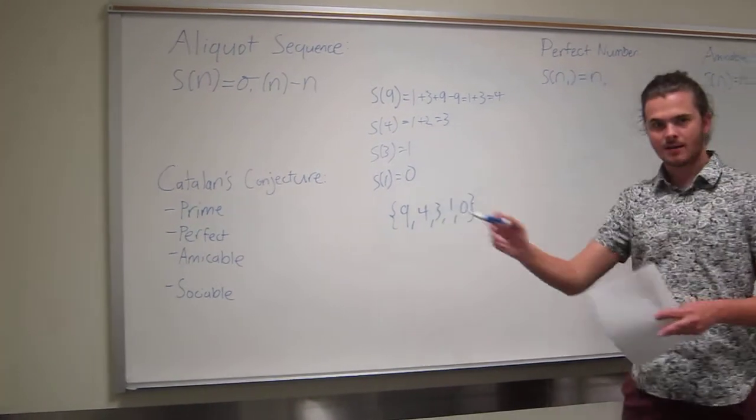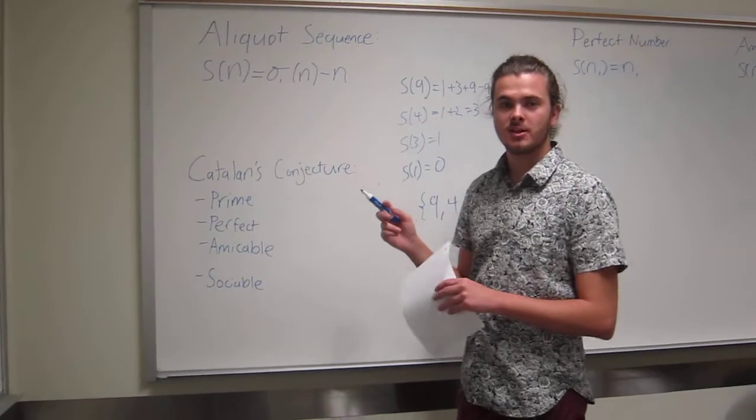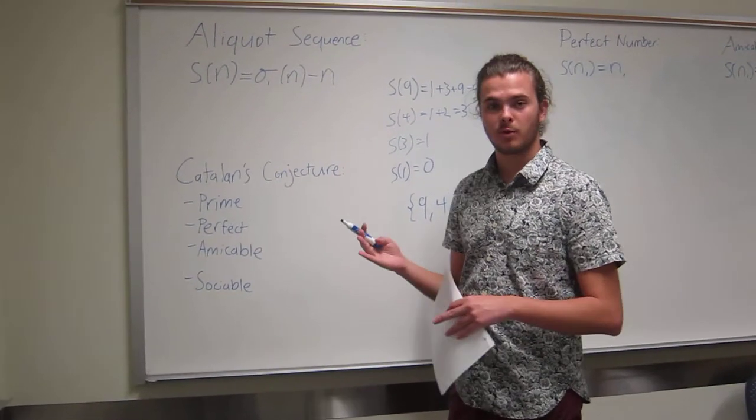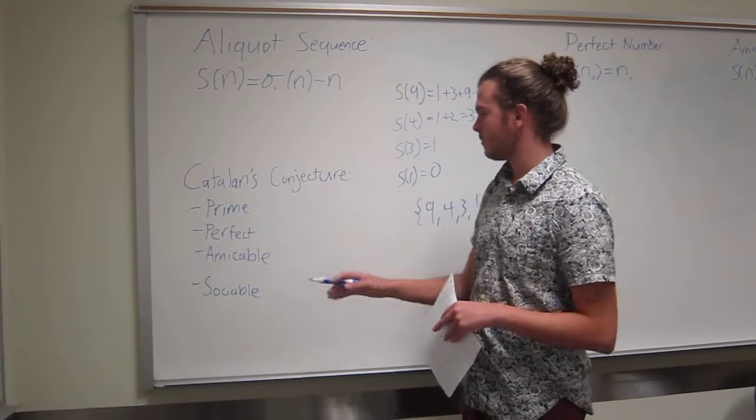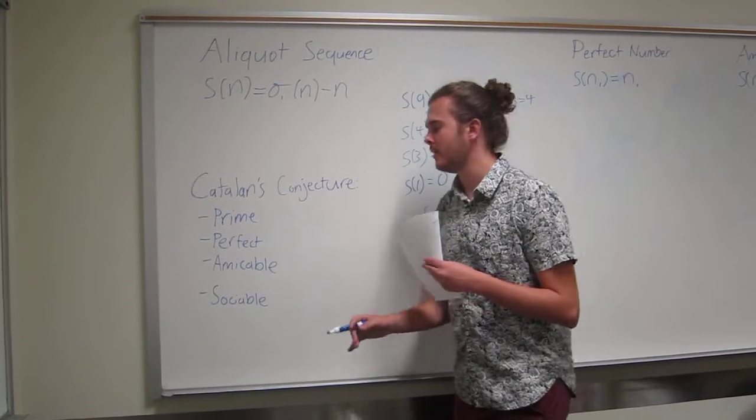Let's get back to Catalan's conjecture. Catalan in 1888 basically said that these aliquot sequences are going to end with one of four types of numbers: prime, perfect, amicable, and sociable. I'll explain those all in a minute.